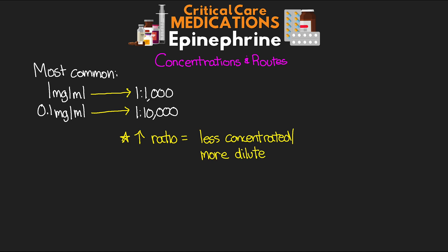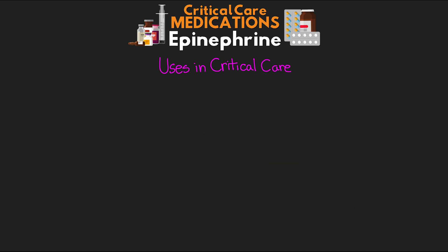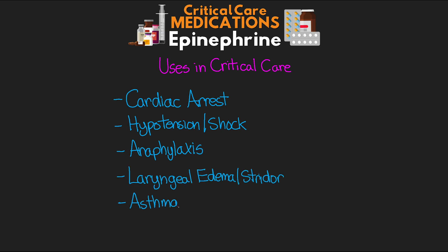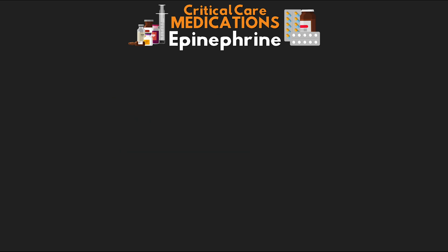As far as routes of administration go, epi can be given either IV, IM, subcutaneous, or via inhalation. There are many different uses for epinephrine, but the most common uses in critical care are going to be for cardiac arrest, hypotension and shock, anaphylaxis, laryngeal edema and stridor, asthma, and in combination with a local anesthetic. Let's go through each one, starting with our use in cardiac arrest.